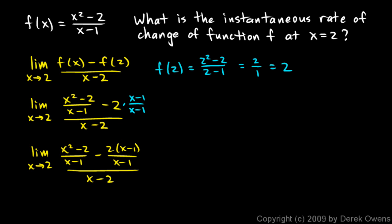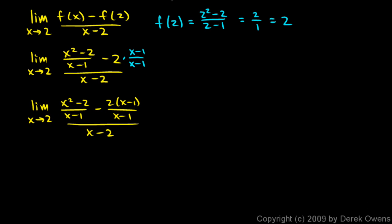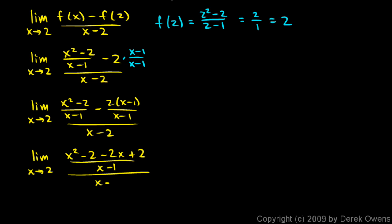The two fractions share a denominator and can be combined. Distributing — remembering the negative signs — gives the limit as x approaches 2 of (x squared minus 2 minus 2x plus 2) all over (x minus 1), all over (x minus 2).